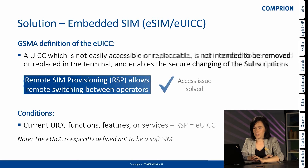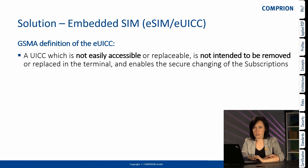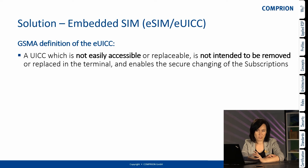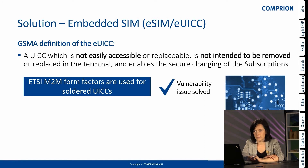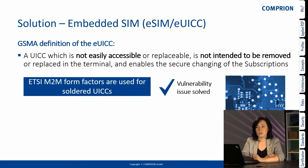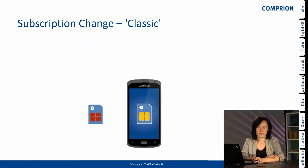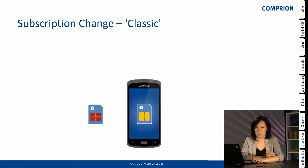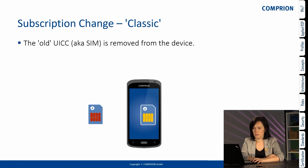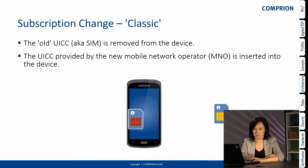A UICC which is not easily accessible and replaceable is not intended to be removed or replaced. Here we have the form factors defined by ETSI — ETSI M2M — used for the soldered UICC, which solves the vulnerability issue. You can see it in the picture — this is one way it can look. The classic way of changing the operator was when we had a regular SIM card inserted into the mobile, and if we wanted to switch operators we simply removed it and inserted a new one.